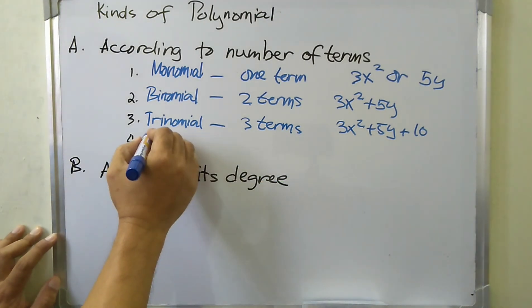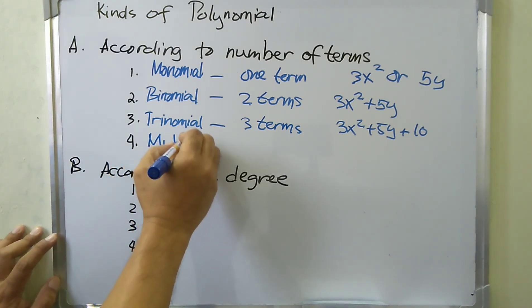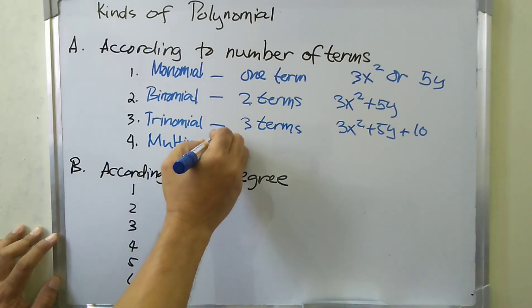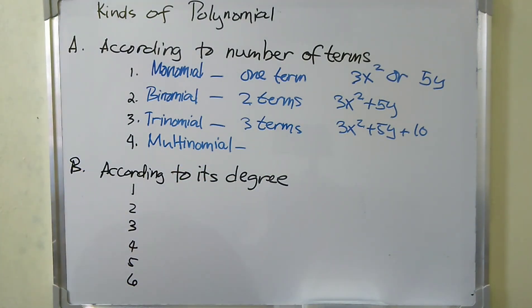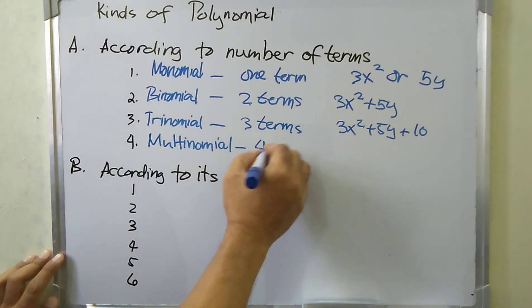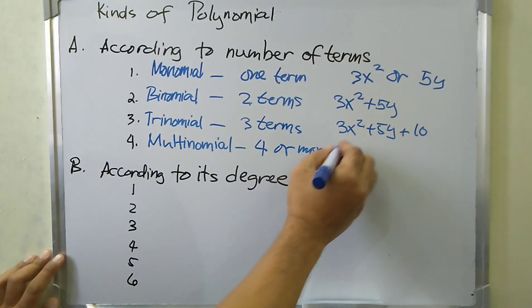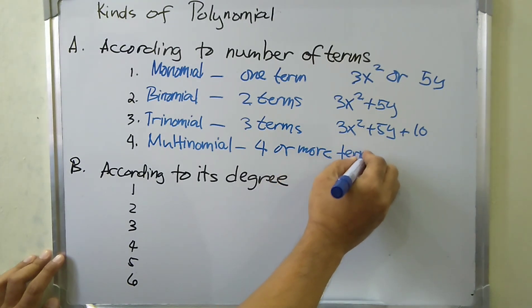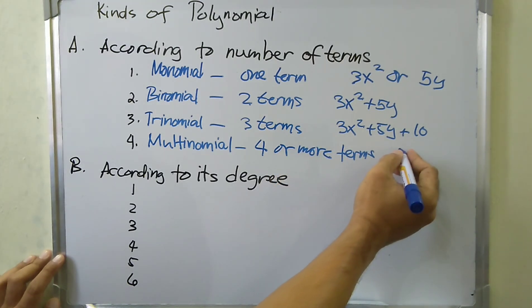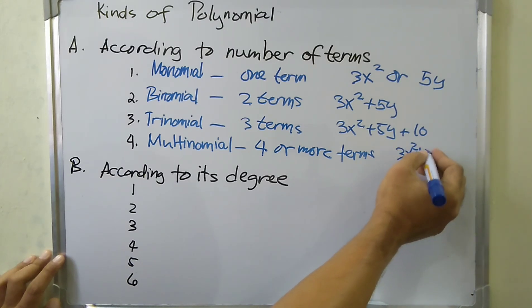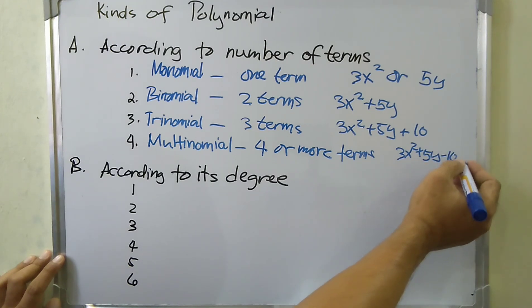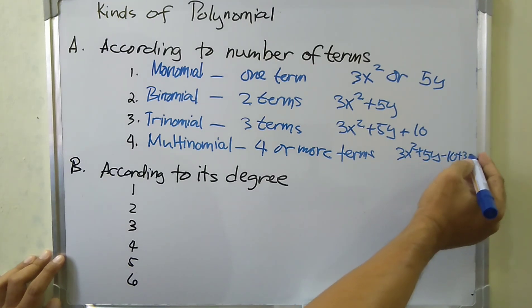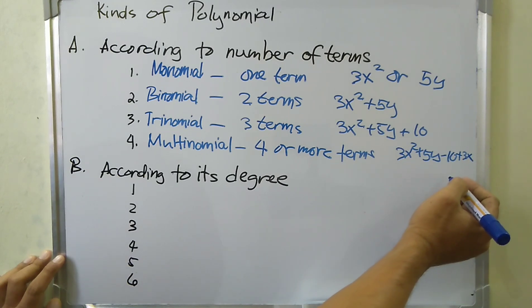And we have multinomial — a kind of polynomial with four or more terms. For example, we have 3x squared plus 5y minus 10 plus 3x.